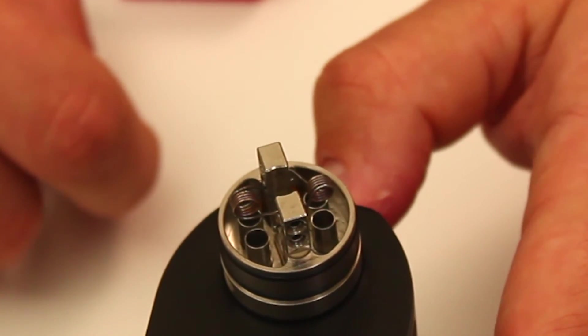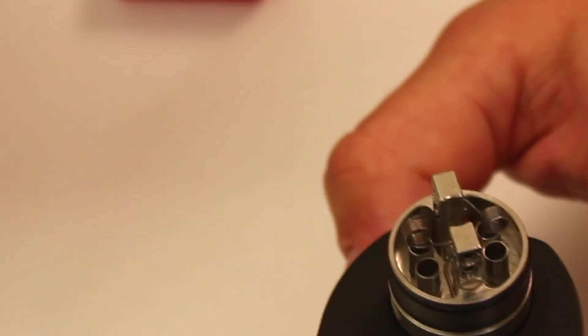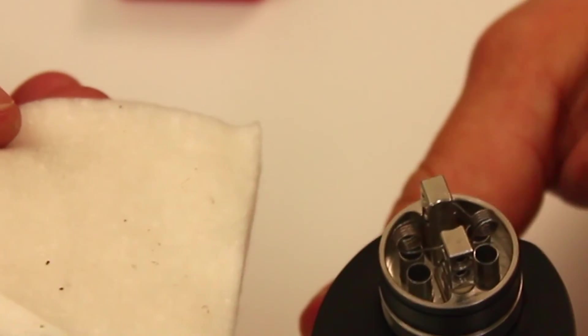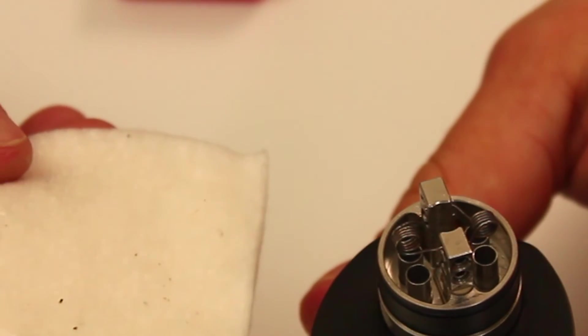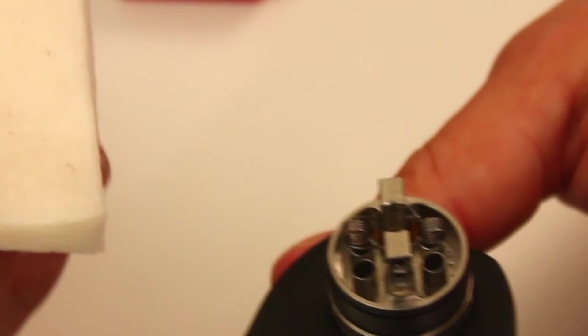So those are looking pretty nice. Once you got these heating up and cooling down evenly, you then need to wait for the coils to actually cool down because you're gonna take your cotton and you're gonna insert your cotton into your RDA, RTA, RDTA, whatever you feel like using. So we're gonna take a quick break, let these coils cool down, come back after they're done.